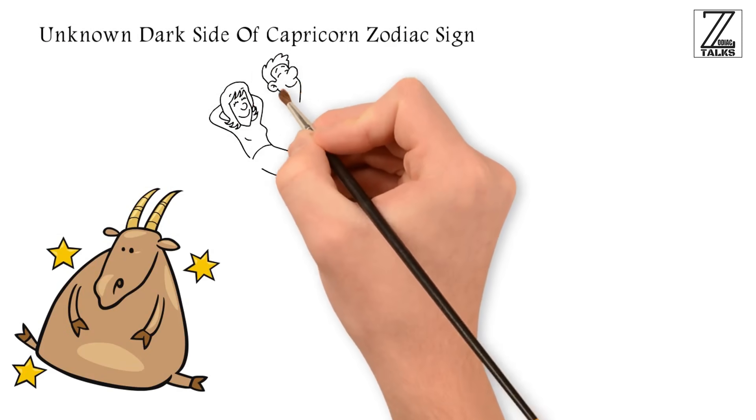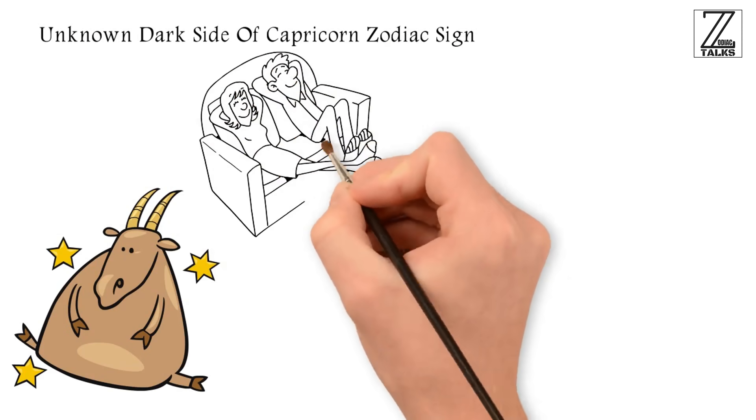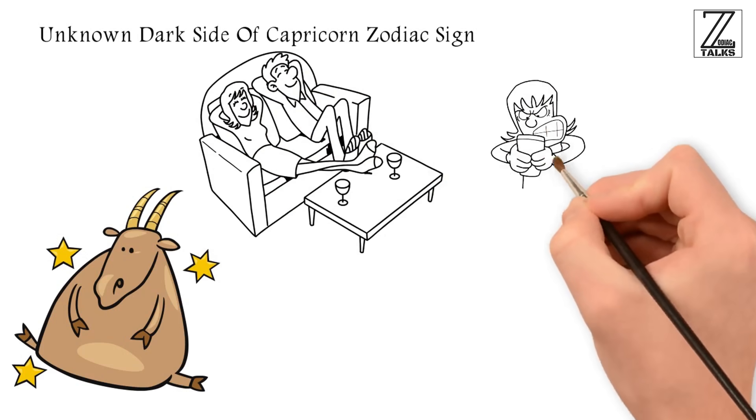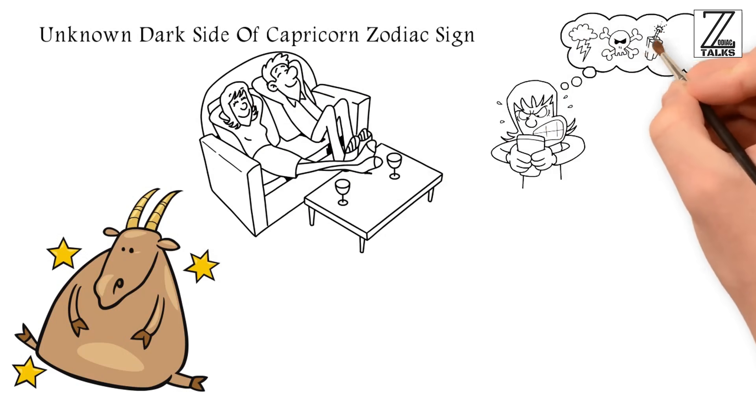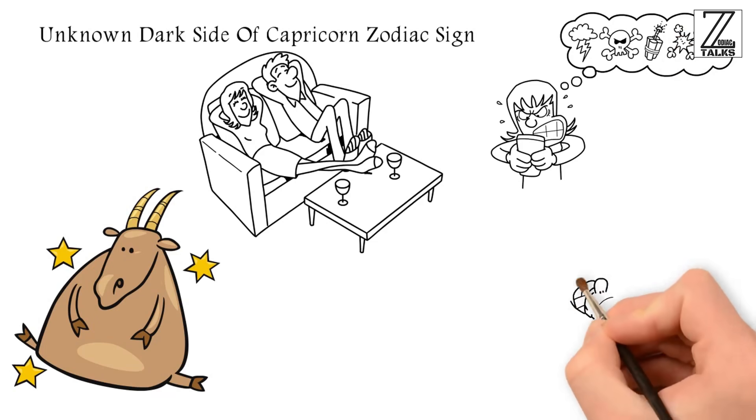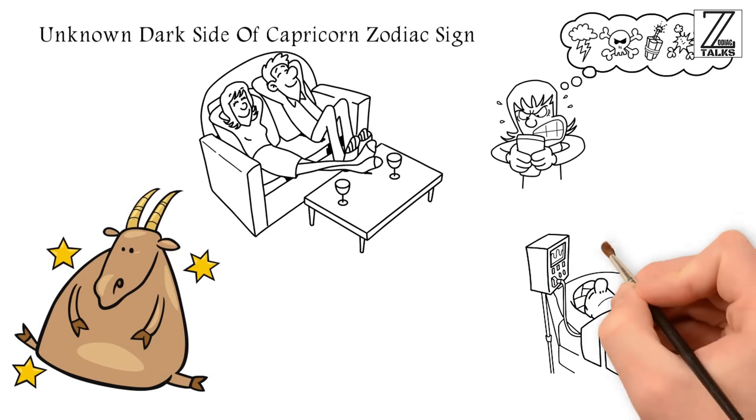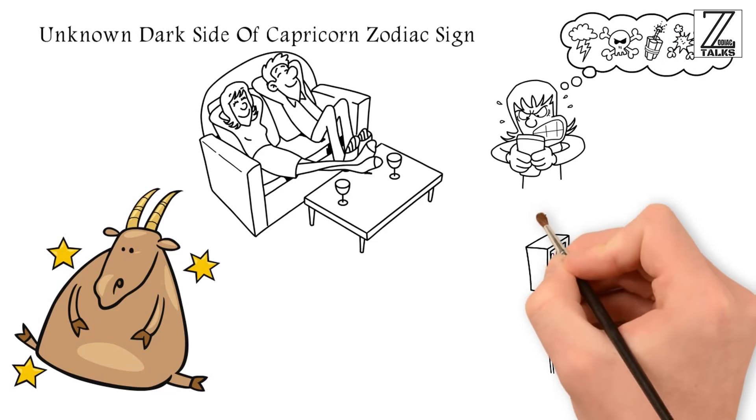This zodiac sign has the ability to stay calm and level-headed at all times. Natives of this zodiac believe in thinking things through as opposed to acting on impulse. They are practical, logical beings, not to mention highly patient and disciplined.